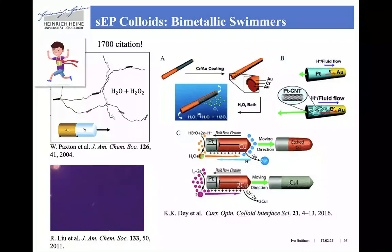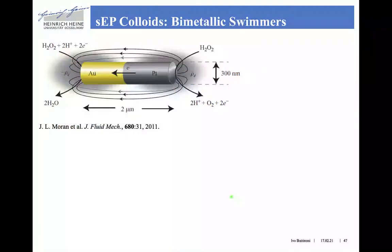Even though later many other similar designs have been proposed — see for example this review — in order to achieve velocities as large as hundreds of microns per second. These gold and platinum rods behave as batteries, where hydrogen peroxide is decomposed by an oxidation reaction on the platinum side and recombined on the gold end by a reduction reaction. This leads to two diffuse clouds of counter-ions, one with positive and one with negative charge density, and therefore to an internal electric field.